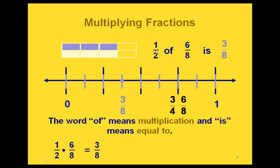For example, if we're trying to find 1 half of 6 eighths, 1 half of 6 eighths would be 3 eighths. Because if we look at 6 eighths graphed on the number line, if we want half of that value, then we would go half the distance from 0 to there. So instead of counting over 6 of our 8 equal portions, we'd only count over 3.